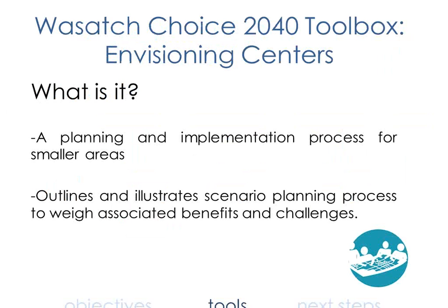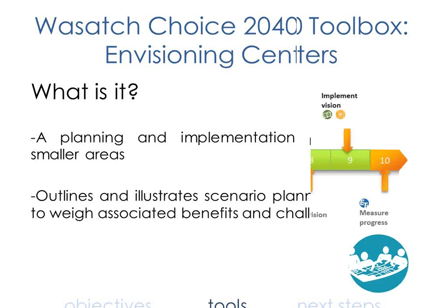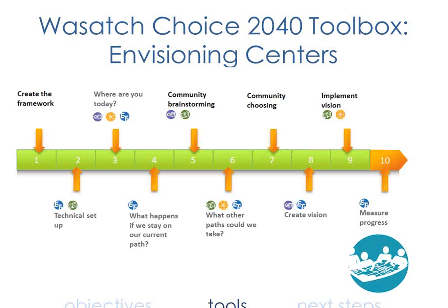The first tool is the Envisioning Centers tool, part of the Wasatch Choice for 2040 partnership, mainly developed by Envision Utah. This is a planning and implementation process for public participation. It outlines and illustrates the scenario planning process, allowing a range of options and the ability to weigh benefits and challenges. The user creates the framework, and the key questions asked through that process can be explored using these tools — from visioning all the way through implementation, with resources to measure progress.